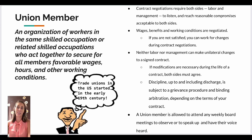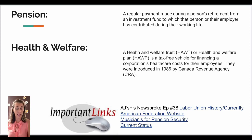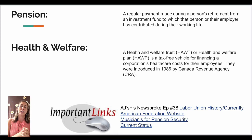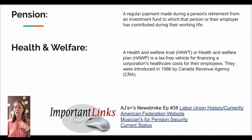We discussed a little bit about pension — a regular payment made during a person's retirement from an investment fund to which that person or their employer has contributed during their work life. Where we are with pension, as I mentioned, it's in a critical and declining status, yet they have reached some sort of conclusion where litigation is now happening. There are some links below — AJ's News Broke, episode 38 — which explains the labor union history for you, and I'll also include links for the American Federation website and musicians' pension security fund.